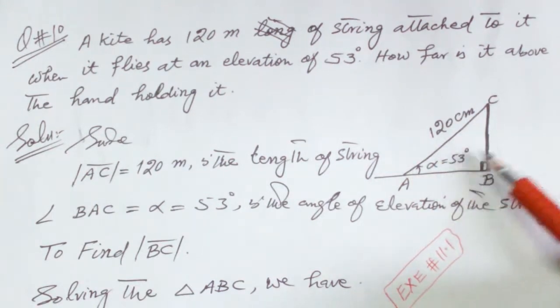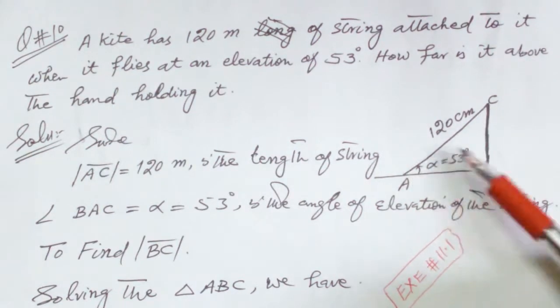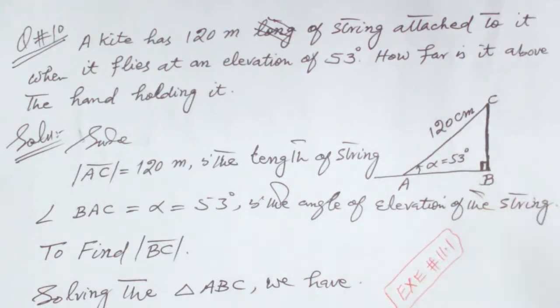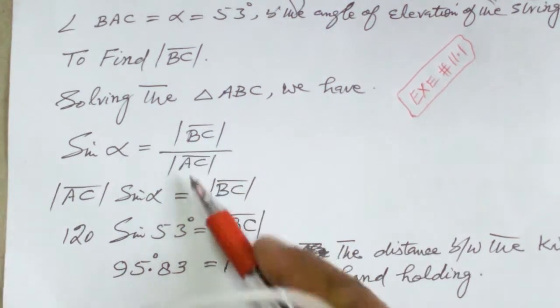BC is the perpendicular and AC is the hypotenuse. This angle is 90 degrees. So with respect to alpha, BC divided by AC is equal to sine alpha.